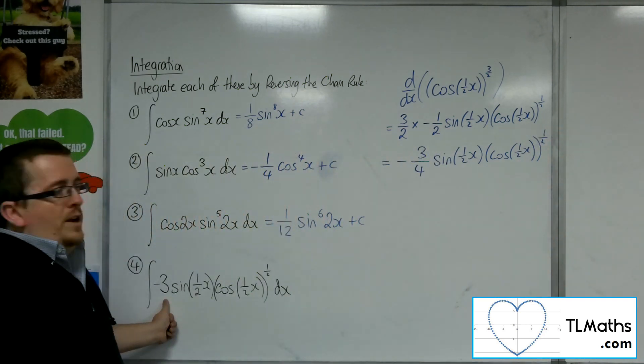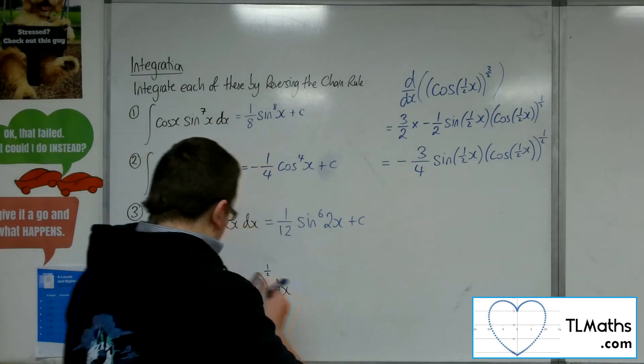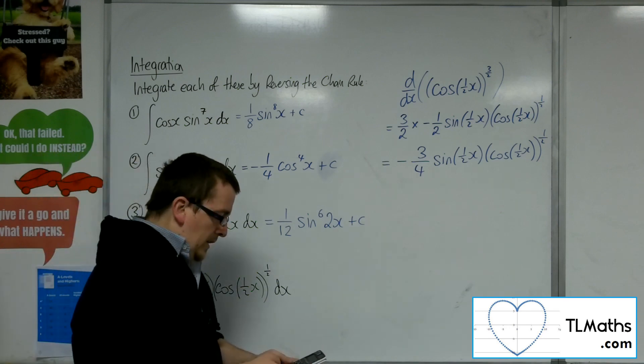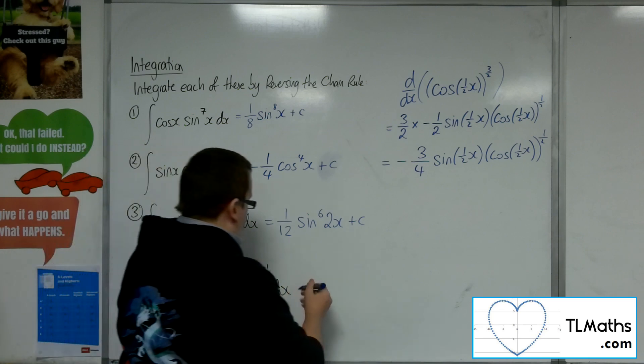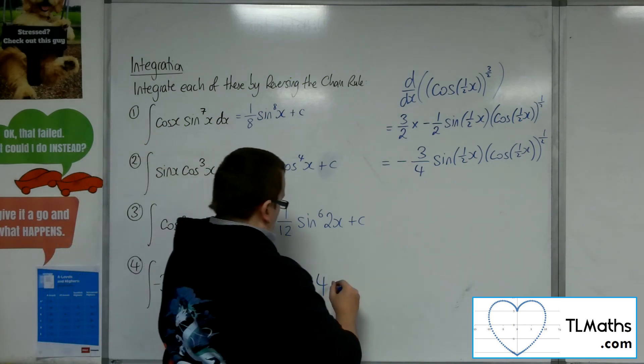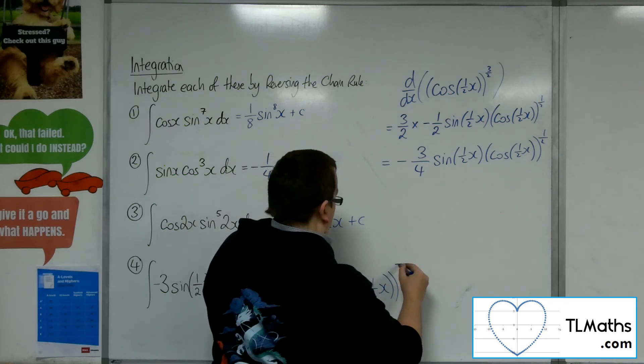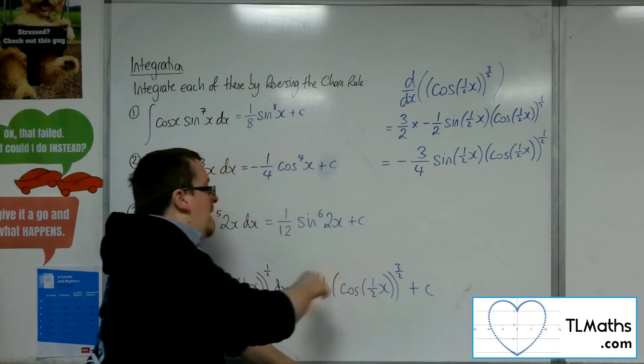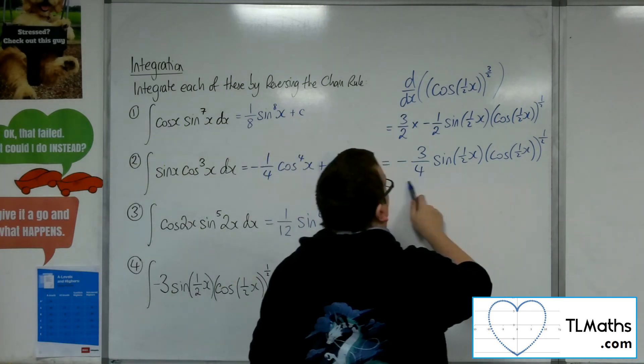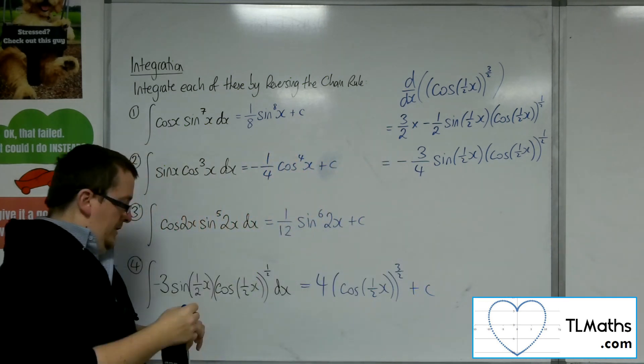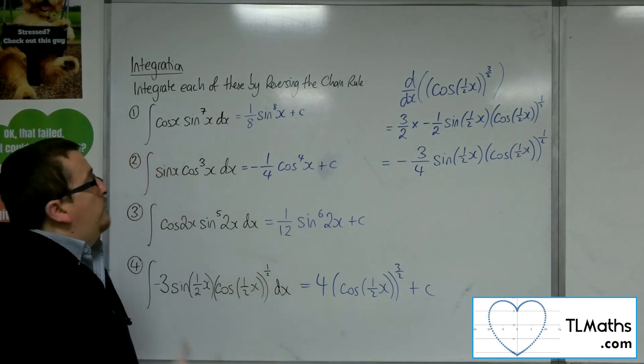Now I've actually got minus 3 out here. So if I do minus 3 divided by minus 3 quarters. OK? So minus 3 quarters gets to be 4. OK? So this should be 4 lots of cosine half x to the power of 3 halves plus c. Because that should differentiate to this. Because if I multiply this by 4, I will get to that. OK? So that is how we can deal with trigonometry and reversing the chain rule.